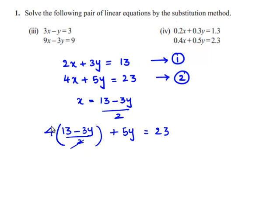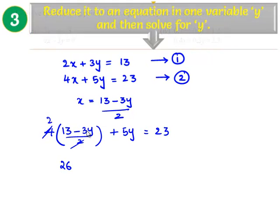2 goes in 4 as 2. So 2 times 13 is 26, and 2 times -3y is -6y, and this is plus 5y = 23.